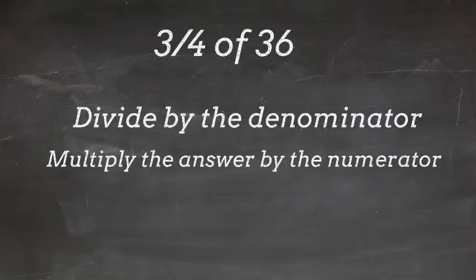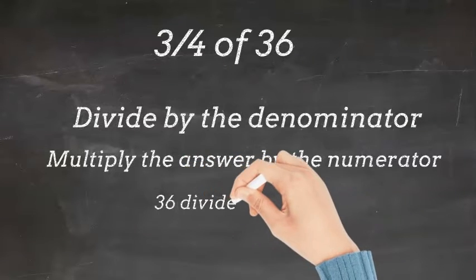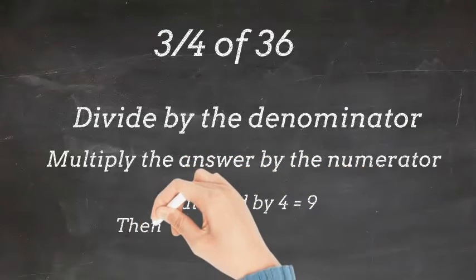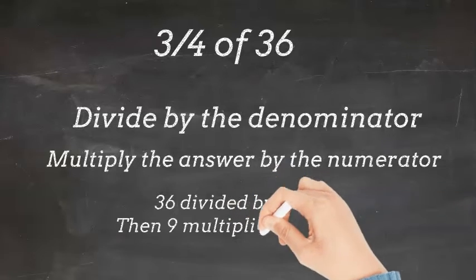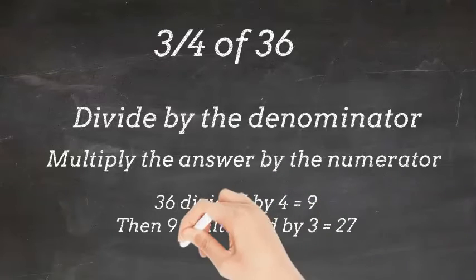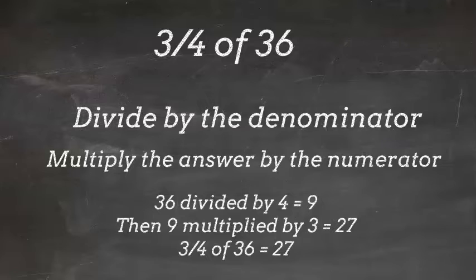So first we are going to do 36 divided by 4, which equals 9. Then we are going to do 9 multiplied by 3, which equals 27. So 3 quarters of 36 equals 27.